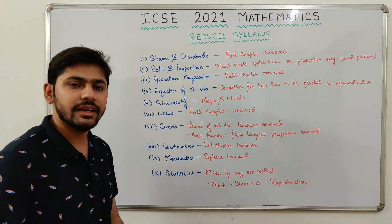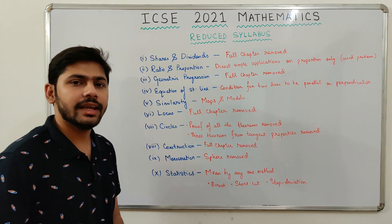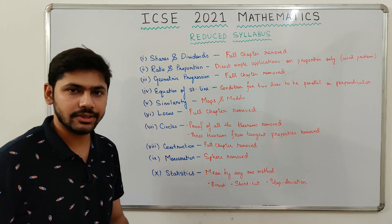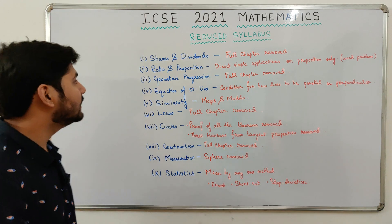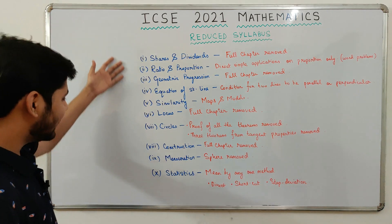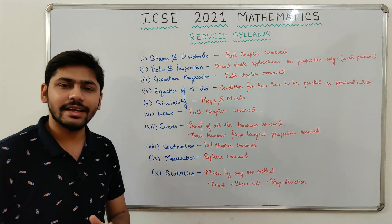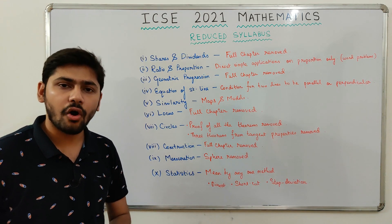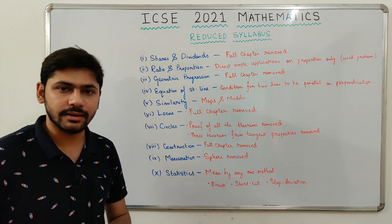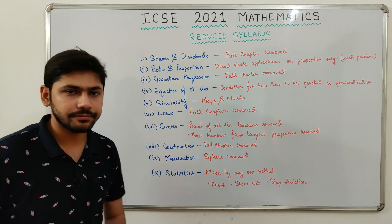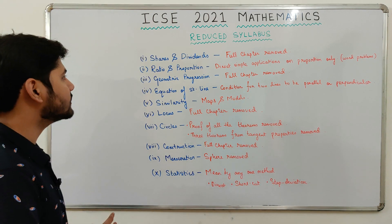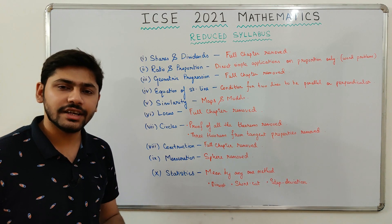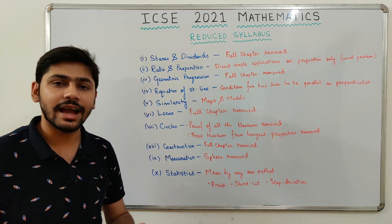Let's begin with the reduced syllabus for the ICSC 2021 Mathematics Board Examination. There are 10 chapters where either the entire chapter or some portion has been removed. First, Shares and Dividends — the entire chapter of Shares and Dividends has been removed.